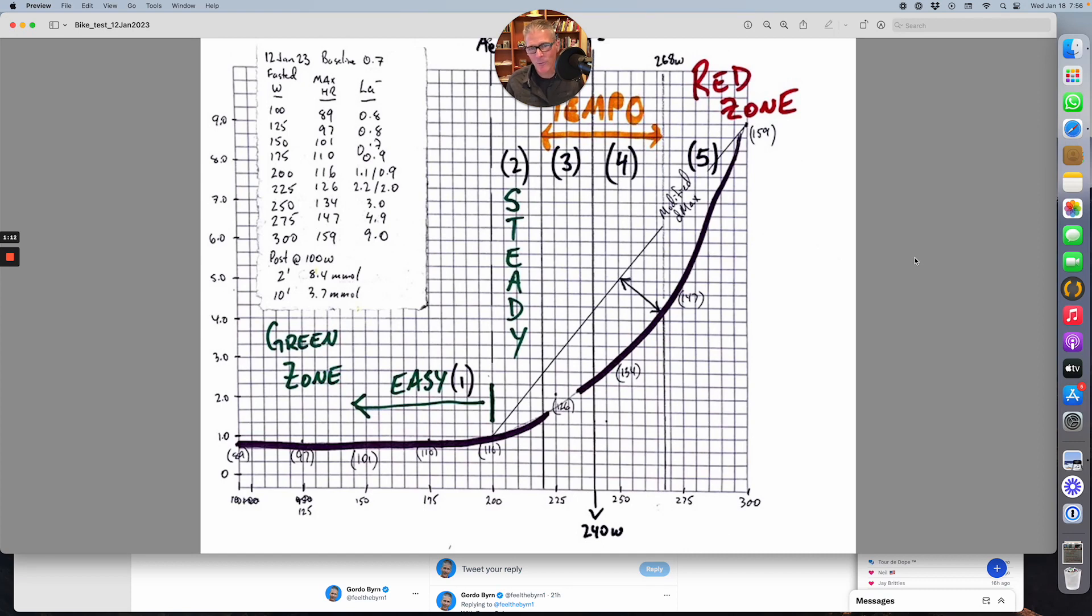As I ramp up, I'll come into zone one, which is about 110 beats for me at 175 watts. As I'm coming in, I can feel the work rate going up, but my breathing stays pretty much the same. Then as I start to come up into the end of zone one, my easy zone, I'm coming up towards the bottom of zone two.